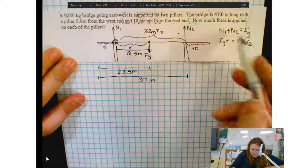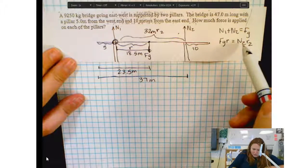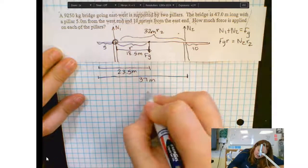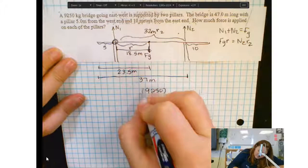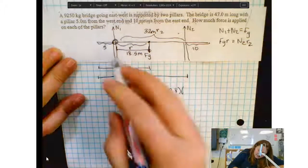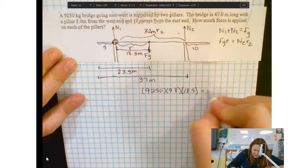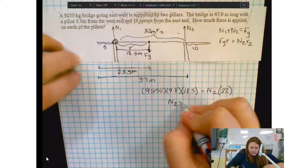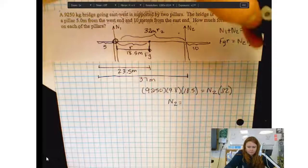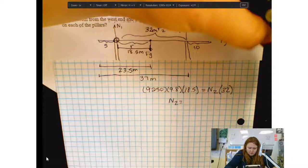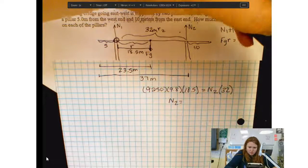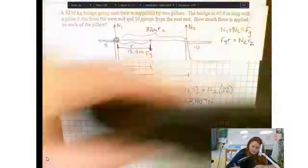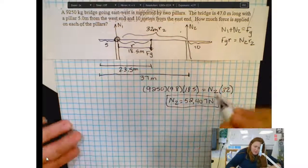And now we just need to solve. I'm going to start by finding N2. Again N1 is not going to cause a torque because it's right here at the end. So my force of gravity is going to be the mass of the bridge times 9.8 times the radius of 18.5 meters. That's going to equal N2 times this 32. Okay when I do that let's see what I get. 9,250 times 9.8 times 18.5 divided by 32. I get about 52,000, 52,407 newtons.